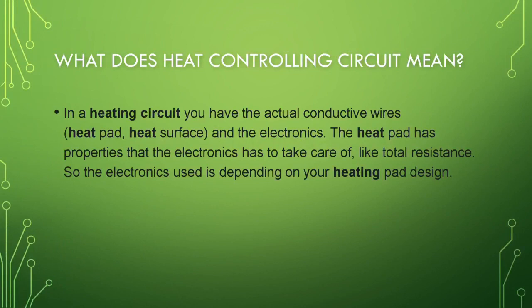First of all, what does a heat controlling circuit mean? In a heating circuit you have the actual conducting wires, heat pad, heat surface, and the electronics. The heat pad has properties that the electronics has to take care of, like total resistance. The electronics used is depending on your heat impact design.